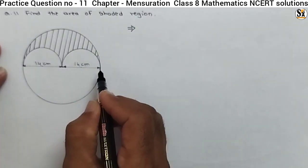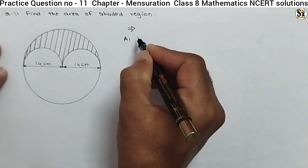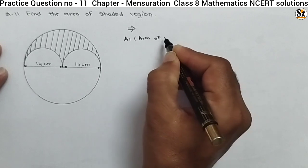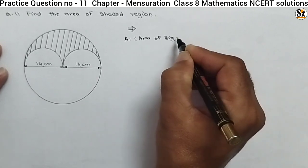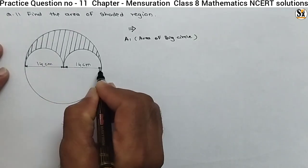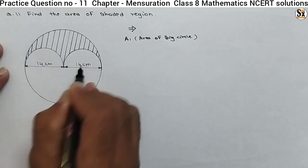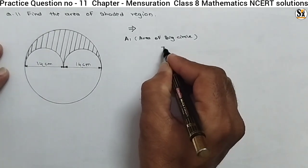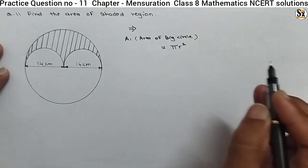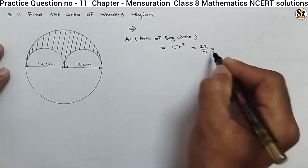Now let's calculate the area of the big circle. Let it be A1, that is the area of the big circle. Here, what is given? 14 is the radius of the big circle. The total diameter is 28, but radius is 14 cm. So the area of a circle — we know the formula — that is pi R squared. Here pi is 22 upon 7, and R is 14.